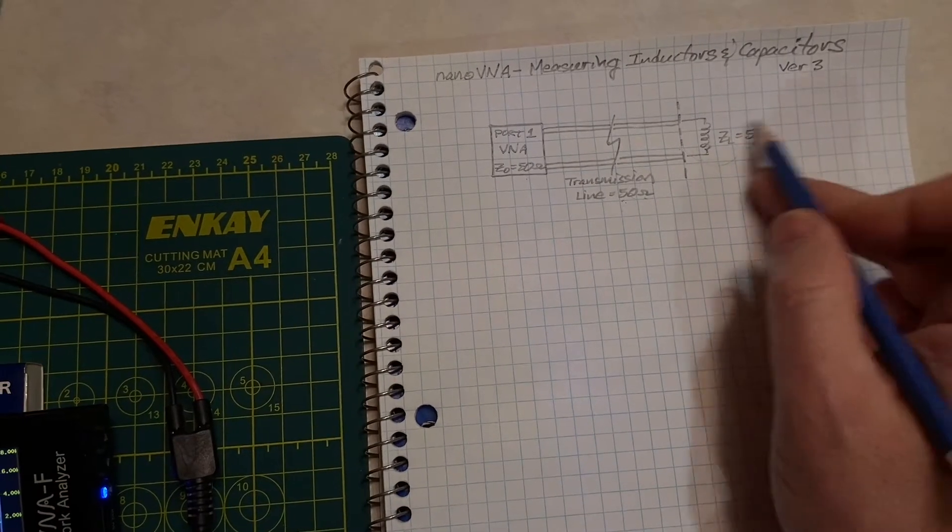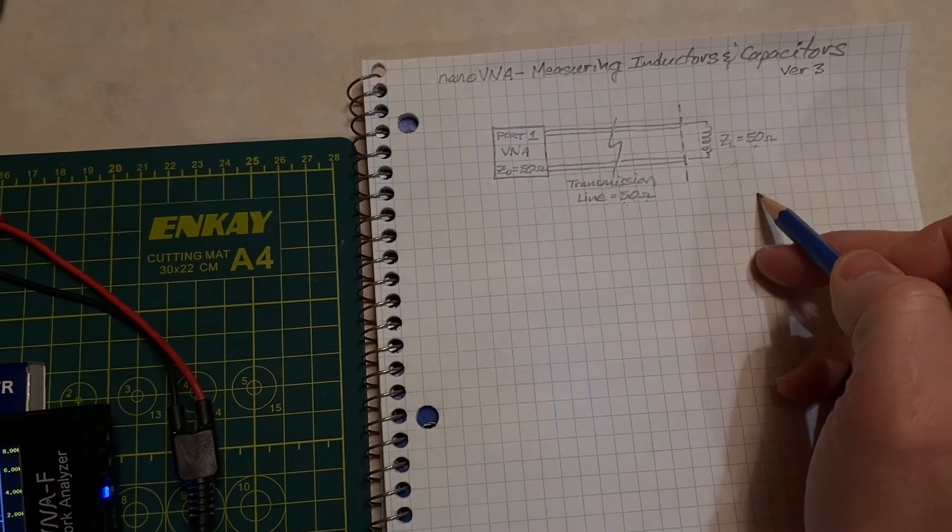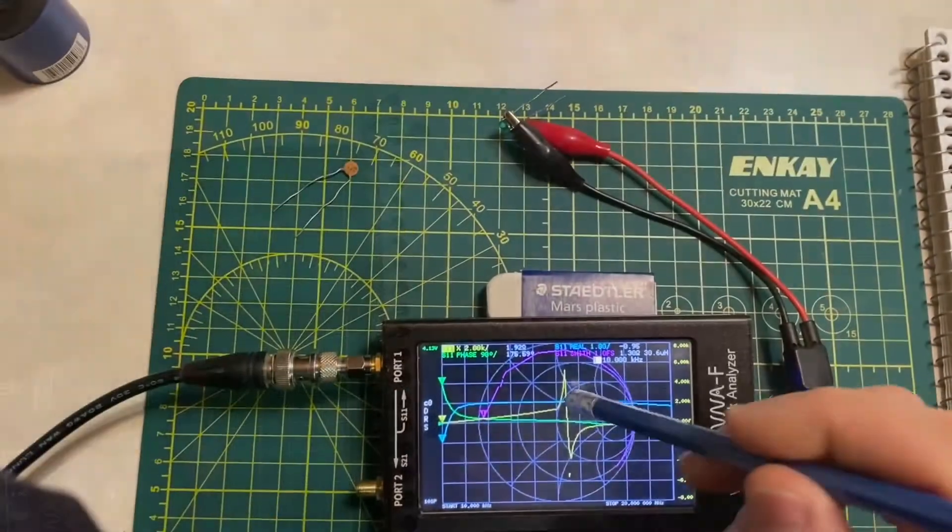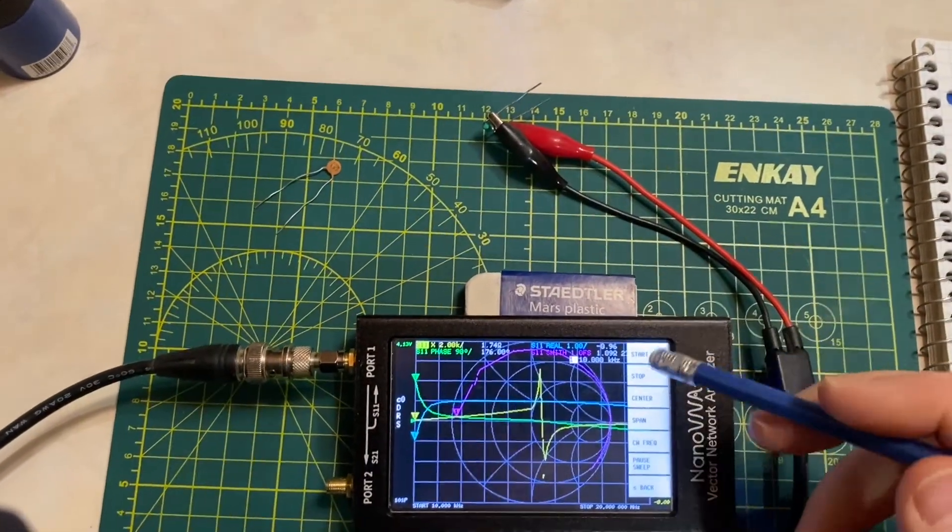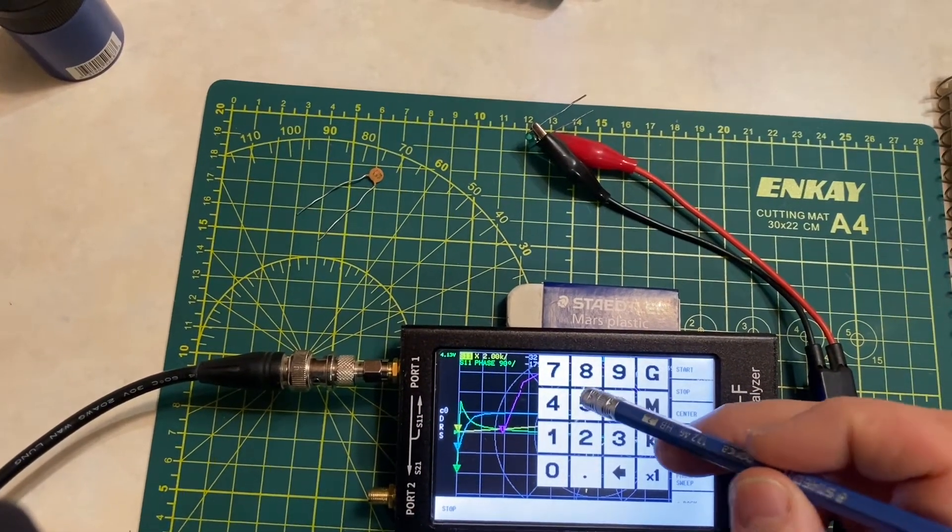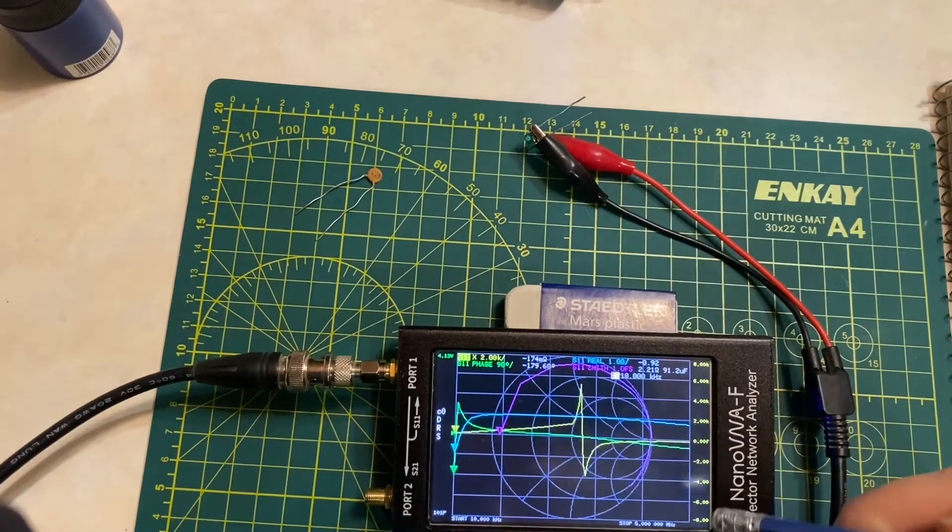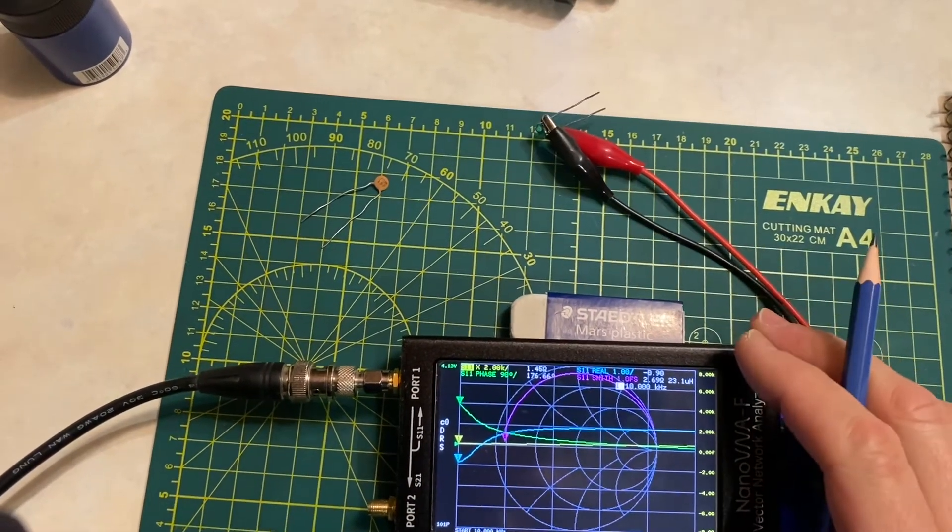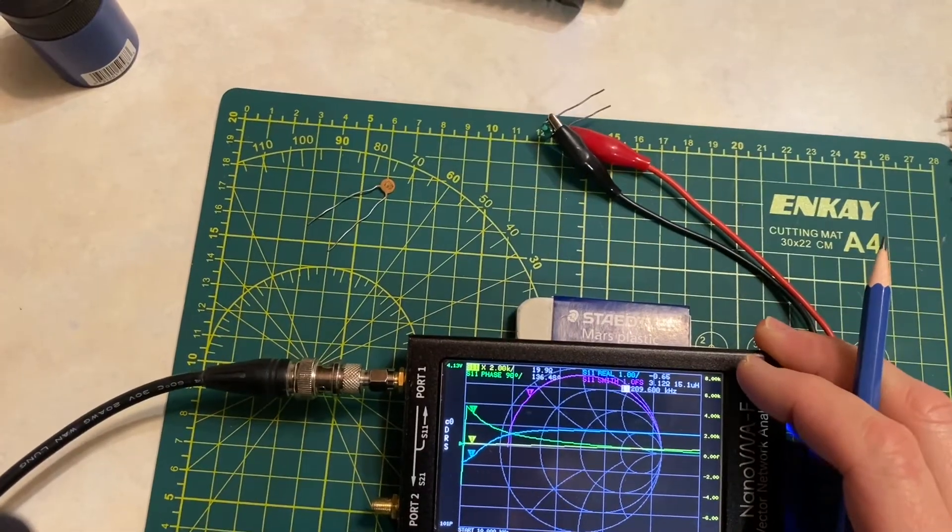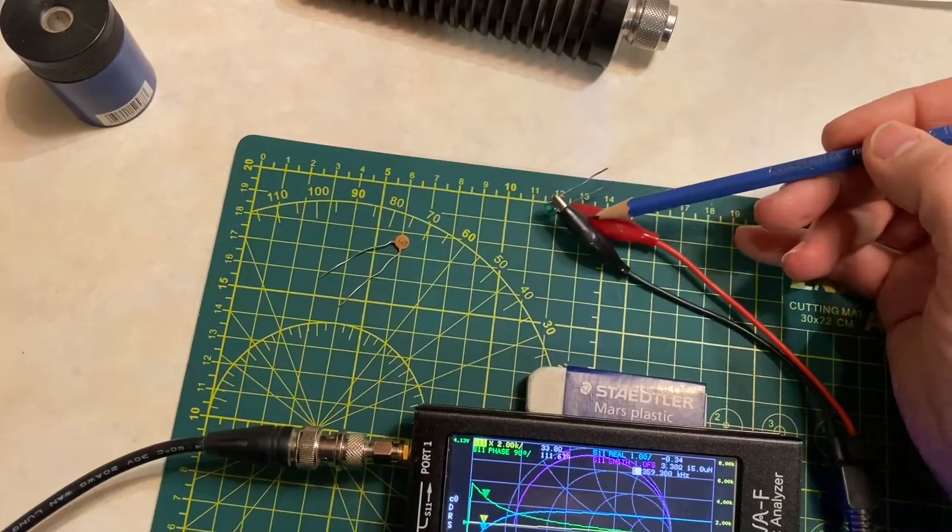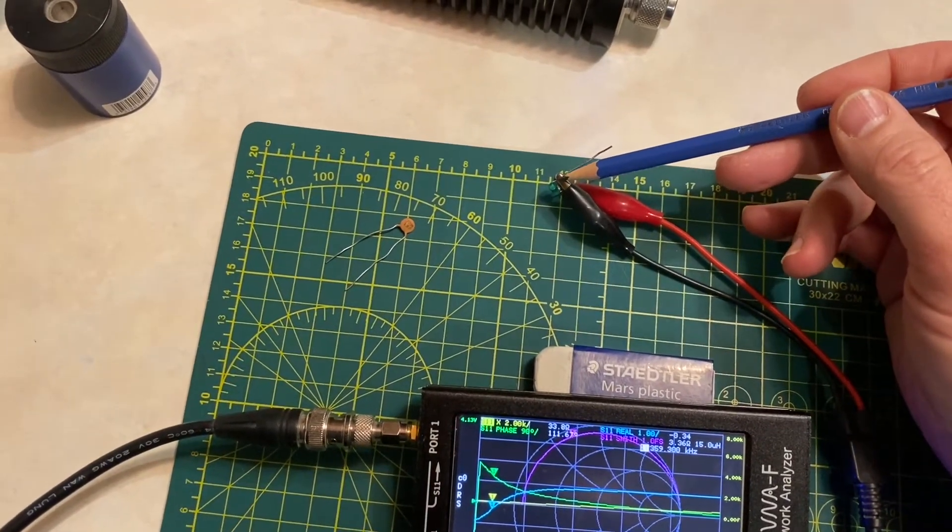We've come back to the Nano VNA, and you can see we've got quite a span here. I'm going to adjust this down to say 5 megahertz, and then we're going to see if we can get a little closer to that 50 ohms.